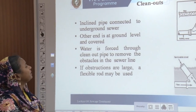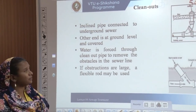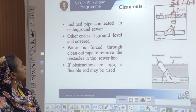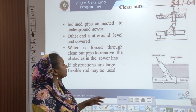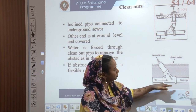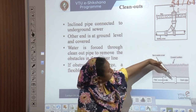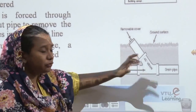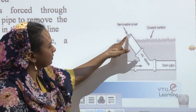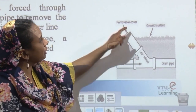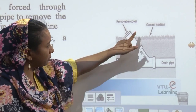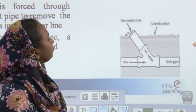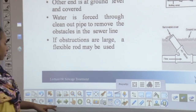Clean outs are removable covers connected to inclined pipes that connect to the underground sewage, with the other end at ground level covered. Water is forced through clean out pipes to remove any obstacles in the sewer line. There is a clean out at an inclined 45 degrees; removing the cover allows cleaning because it ends at ground level or the edge of the pipe, where a person or machine can clean any choking or obstruction and restore flow.